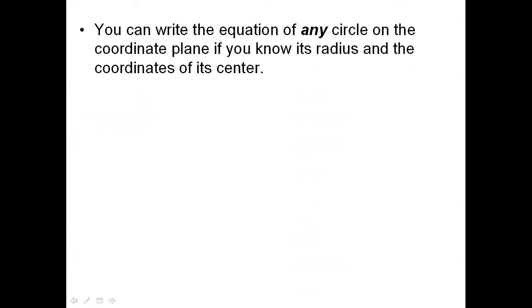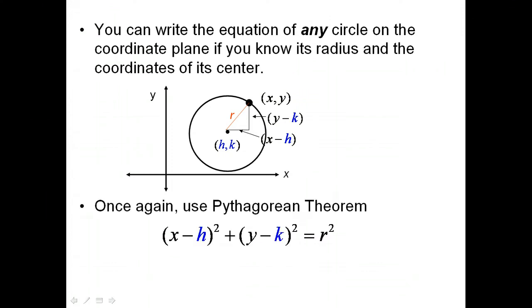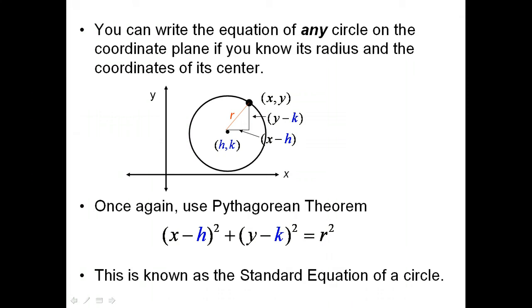You can write the equation of any circle on the coordinate plane if you know its radius and the coordinates of the center. If a circle has center coordinates h and k and radius r, then one side is x minus h and the other is y minus k. Plugging into the Pythagorean Theorem: x minus h, quantity squared, plus y minus k, quantity squared, equals r squared. This is known as the standard equation of a circle.